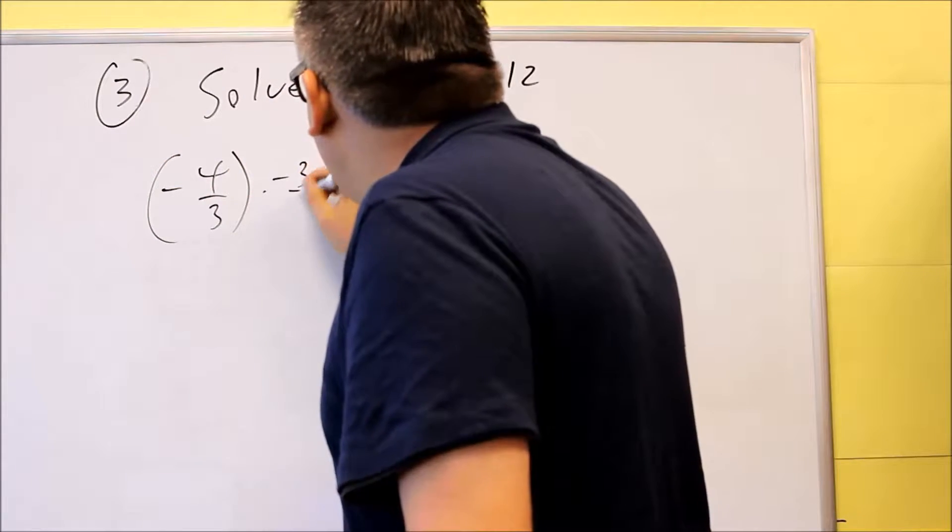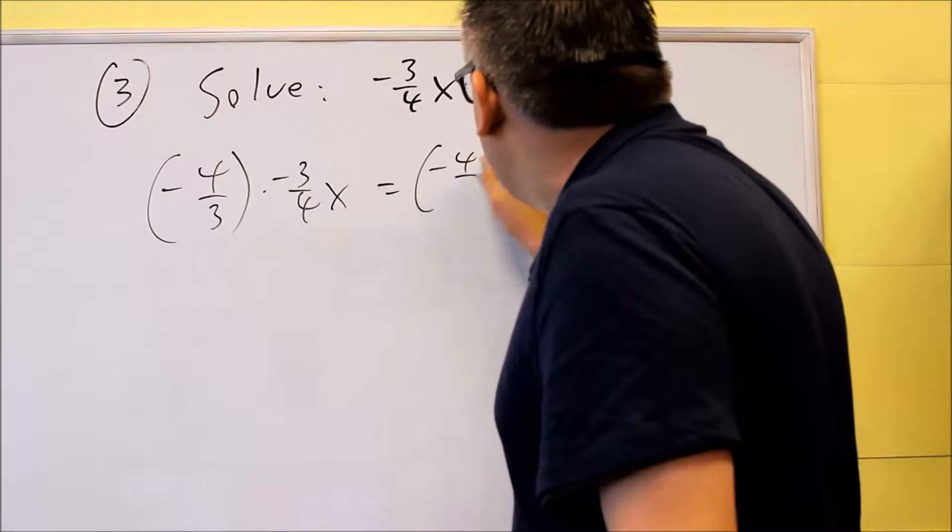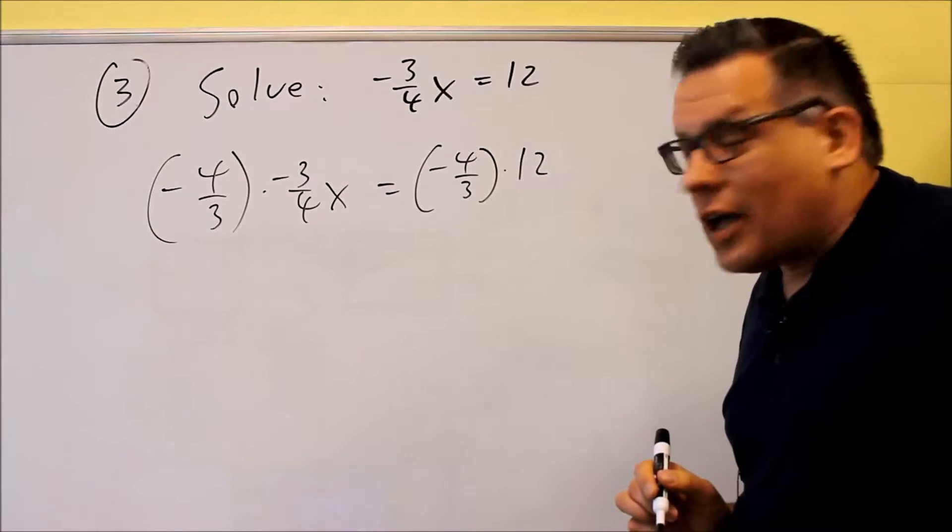We're going to multiply everything by that. So when you do the one side, you have to also do to the other side. So we're going to multiply both sides by negative four-thirds.